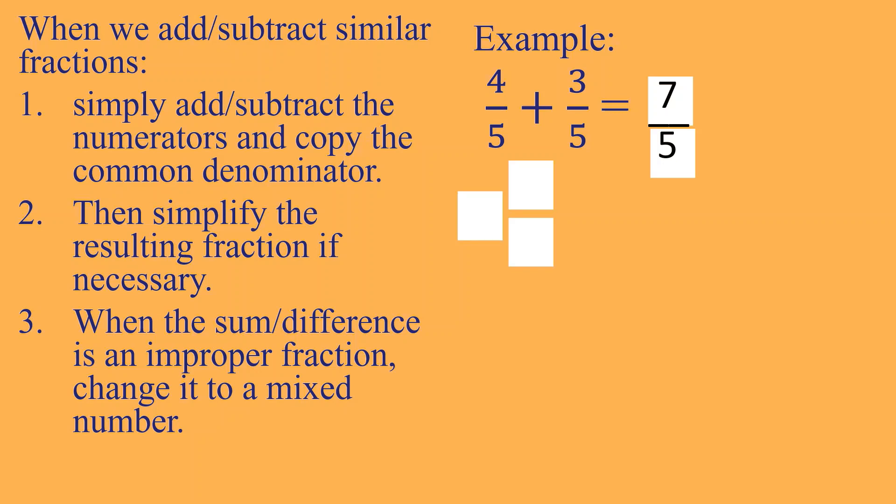So, ang improper fraction ay kagaya nito. Pag mas malaki yung nasa taas kaysa nasa baba. Mas malaki yung numerator kaysa sa denominator, improper po siya. Ang gagawin natin kapag ganyan, ay iti-change natin siya sa mixed number. Paano? Ganito. 7 divided by 5 is equal to 1. Ilan yung remainder? Pag dinivide mo yung 7 sa 5, meron kang 2 na remainder. Siya yung magiging numerator mo. At kukopyahin mo pa rin yung 5 na denominator.